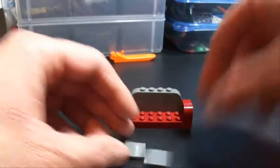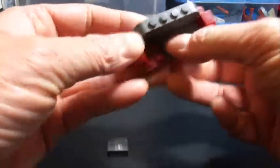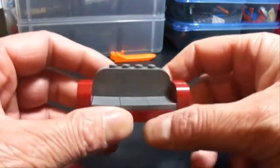Then we can take our 2x2 tiles. We're going to lay those down right in the middle. That's where our minifigure will sit. So it should look like that.